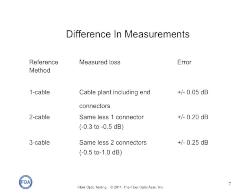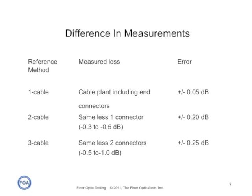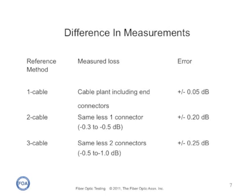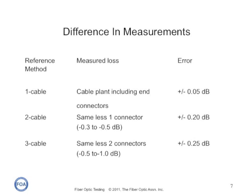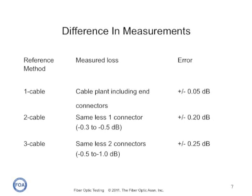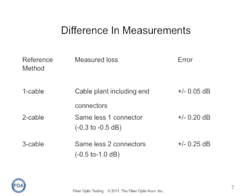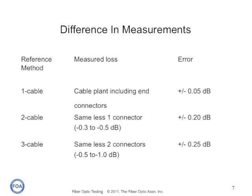Here's how our measured cable plant loss will differ with the three different methods. With the one-cable method, we have no connections in our reference measurement, so we measure the actual loss of the cable plant including the end connections. With a two-cable reference, we measure the same loss but less the value of the connector used in the reference measurement. With a three-cable reference, we get the same cable plant loss but less the value of the two connectors' loss when we set the reference. Because of these unknown connector losses, we have a relatively small error with the one-cable method, but a relatively large error with the three-cable reference method.